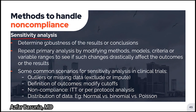With sensitivity analysis, the goal is to determine the robustness of the results or conclusions of a study. Investigators repeat the primary analysis by modifying methods, models, criteria, or variable ranges to see if such changes drastically affect the outcomes. Common scenarios include excluding or imputing values for outliers or missing data, modifying cutoffs for disease definitions, using intention-to-treat versus per-protocol analysis to handle noncompliance, and changing the model by assuming different data distributions such as normal, binomial, or Poisson.